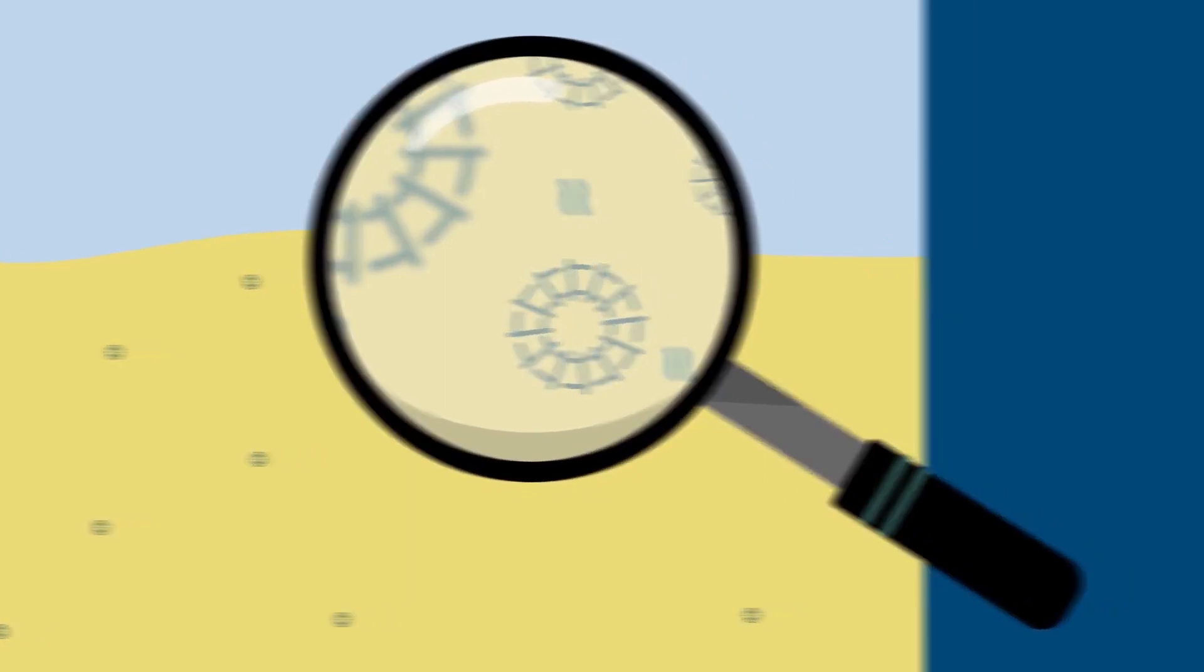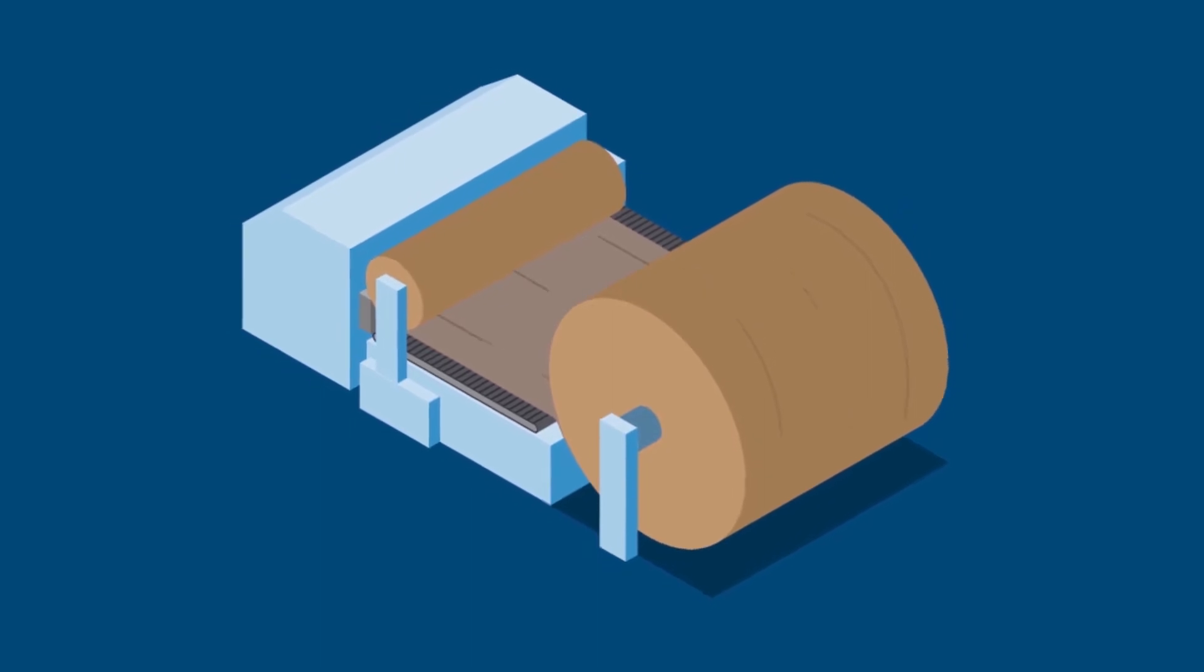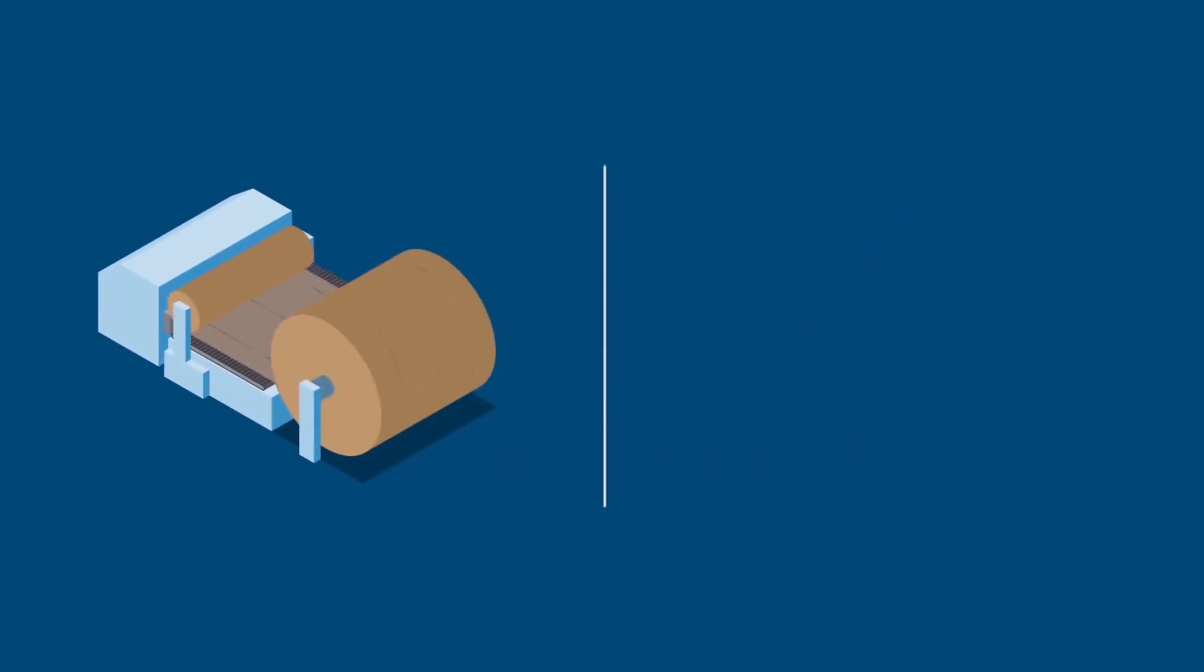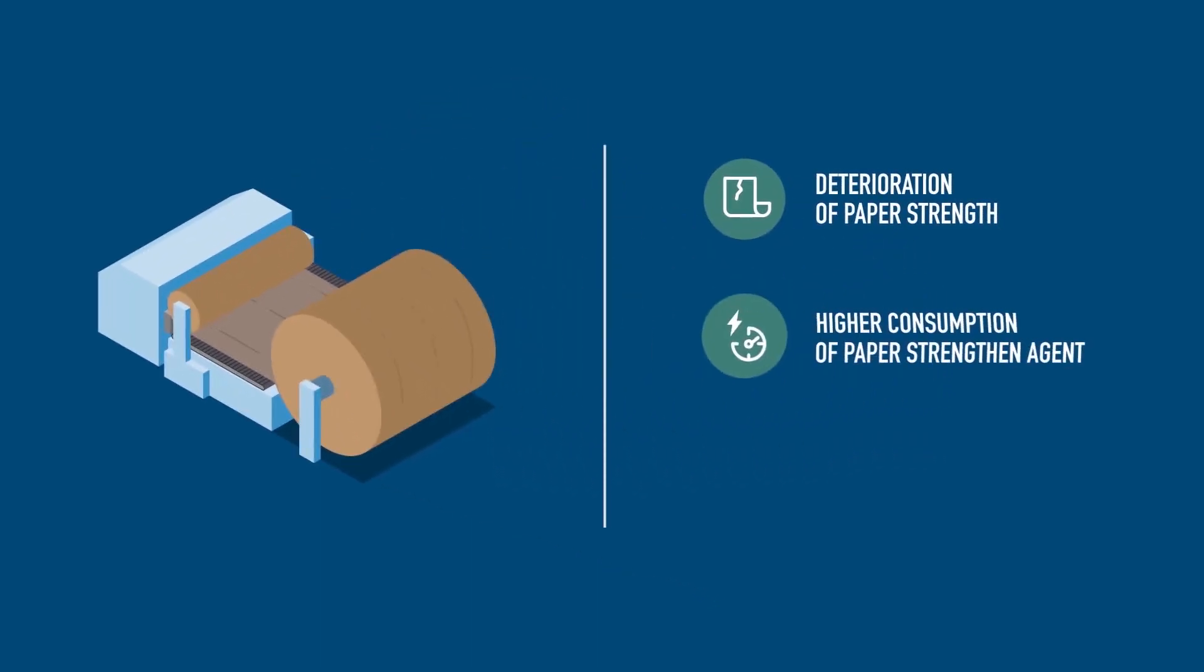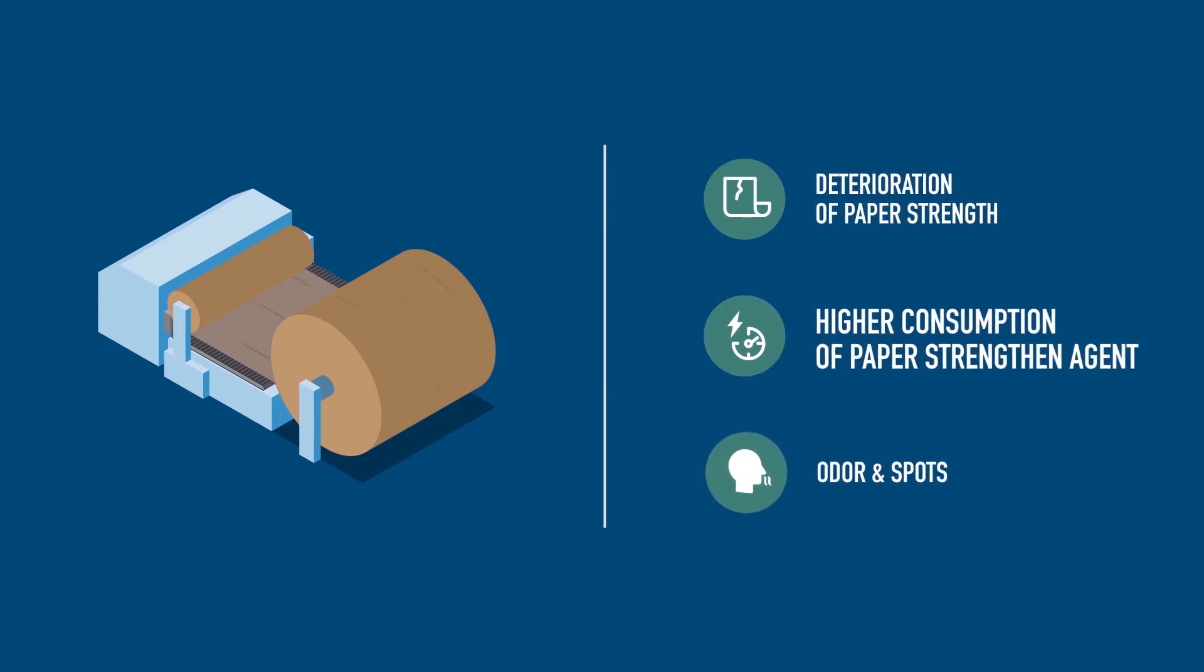Under these circumstances, the board paper manufacturing process experiences more serious damage arising from microorganisms, such as deterioration of paper strength, higher consumption of paper strengthening agent, sizing agent and other wet end chemicals in summer, and the foul odour of hydrogen sulphide.